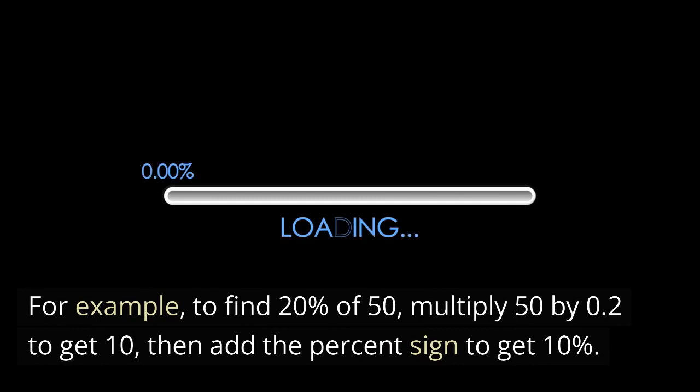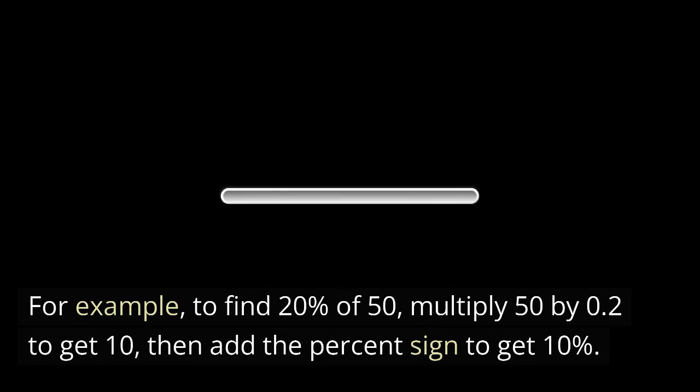For example, to find 20% of 50, multiply 50 by 0.2 to get 10, then add the percent sign to get 10%.